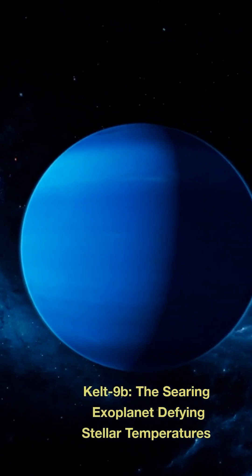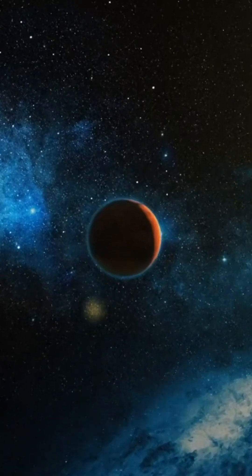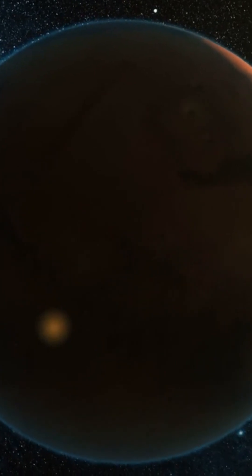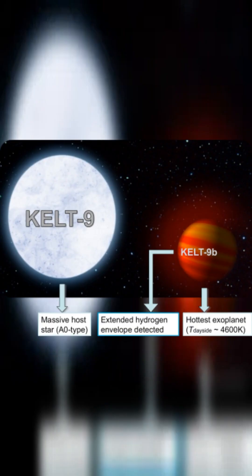KELT-9b, the searing exoplanet defying stellar temperatures. Imagine a world hotter than certain stars, boasting a scorching surface temperature of 4,300 degrees Celsius. Enter KELT-9b, an exoplanet located approximately 670 light-years away from Earth.